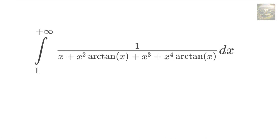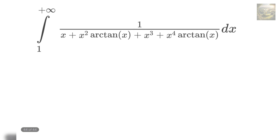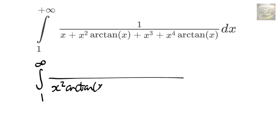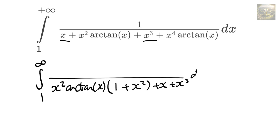The first thing I noticed about this integral is that the arctan of x functions are next to even powers of x. So I thought: if we were to factor out an x²·arctan(x) from this, what would we be left with? That was my motivation. So the first thing we're going to do is factor out an x²·arctan(x). In doing that, we get the integral from one to infinity, and factoring those out we get one plus x² in the denominator, leaving us with x and x³.